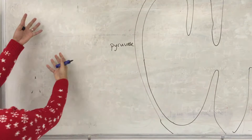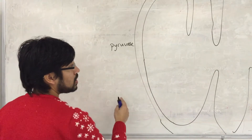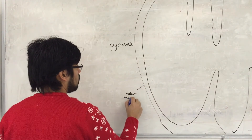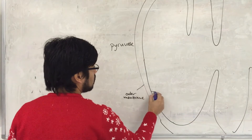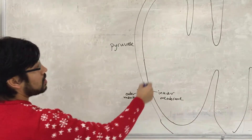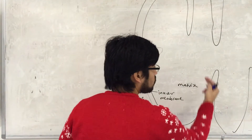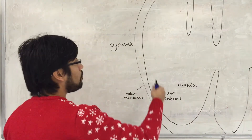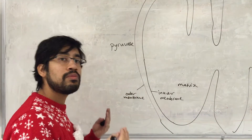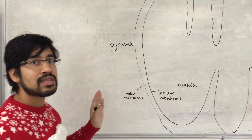This is the mitochondria, this is the cytoplasm. The mitochondria has an outer membrane and an inner membrane, and this is the matrix. In the membrane is where the electron transport chain will be happening. The matrix is where the link reaction and the Krebs cycle primarily will be happening.